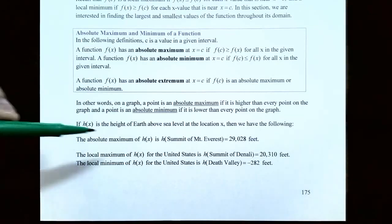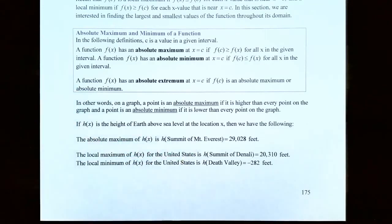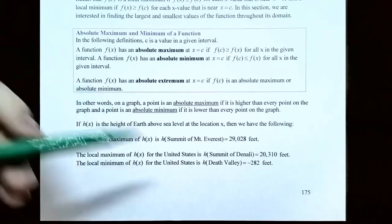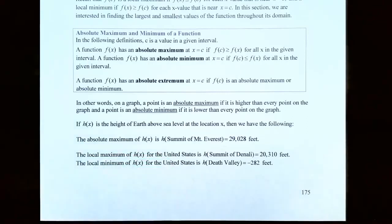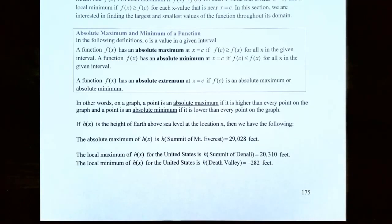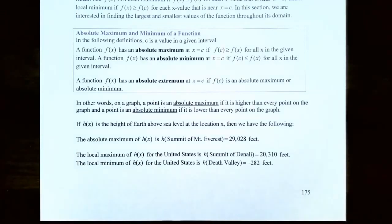If h(x) represents the height of earth above sea level at location x, the absolute maximum would be the summit of Mount Everest at 29,028 feet — the highest point on earth above sea level. A local maximum would be the summit of Denali, the highest point in North America at 20,310 feet, but not the highest point on earth. A local minimum for the United States would be Death Valley at negative 282 feet below sea level, but the absolute minimum would apply to the entire world.